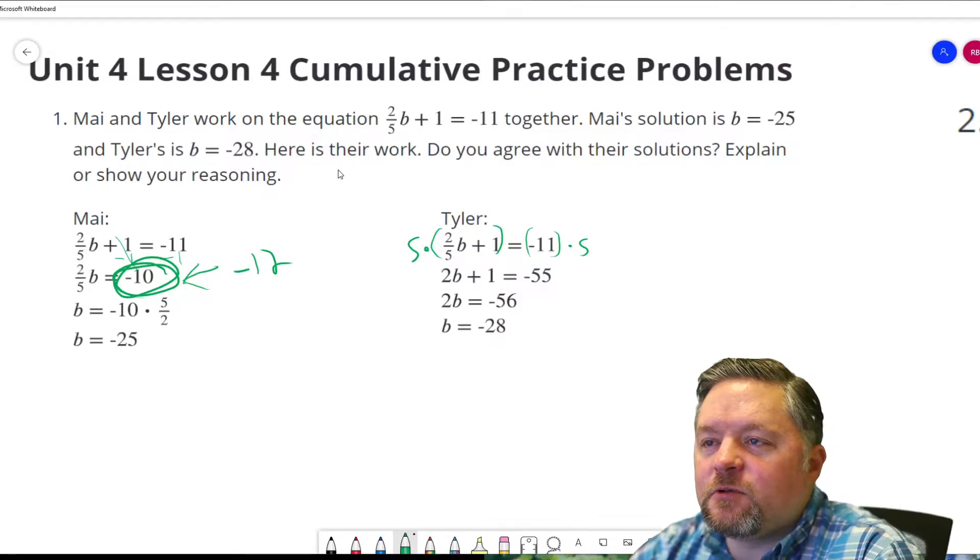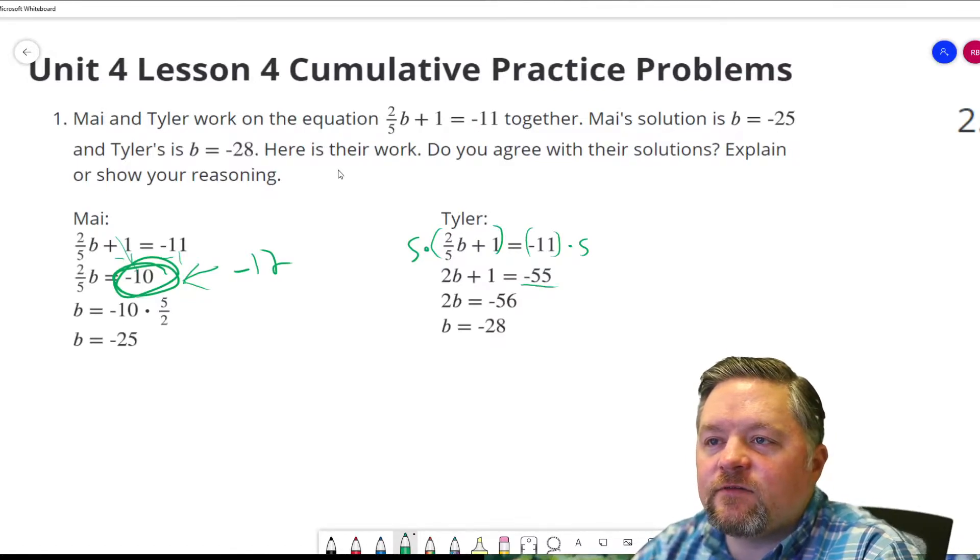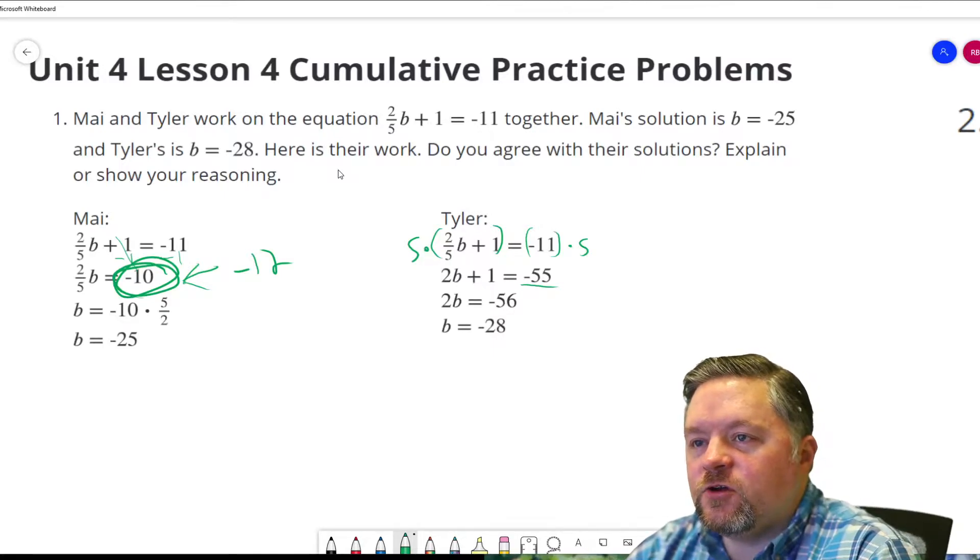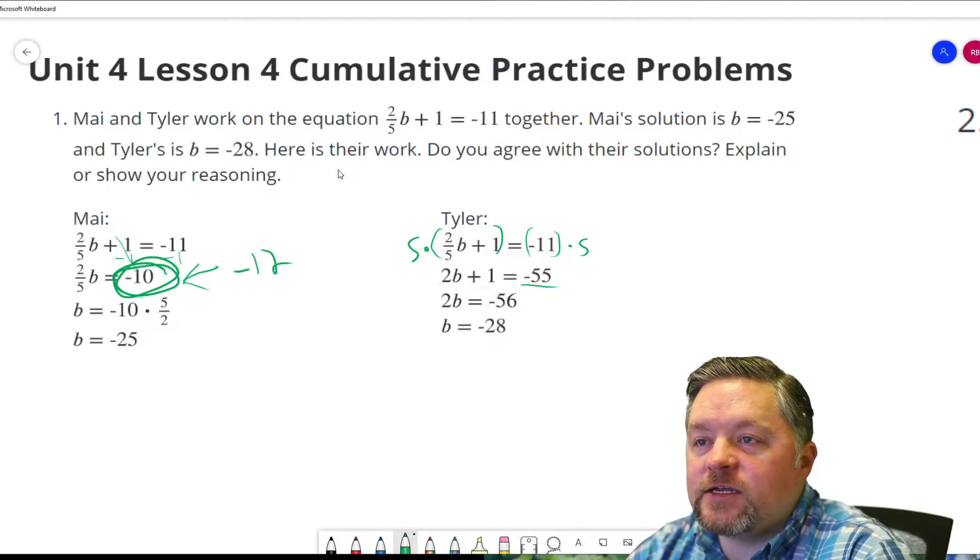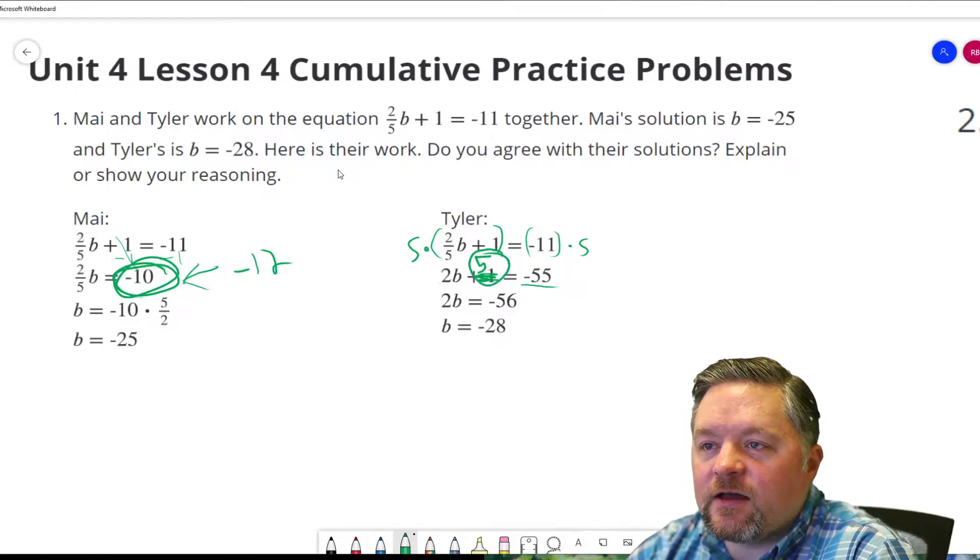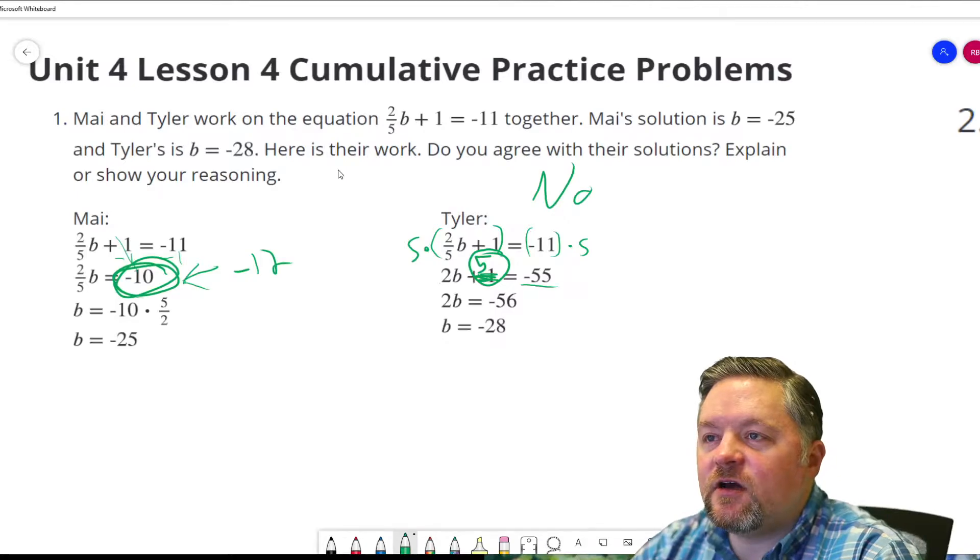And if we multiply negative 11 times 5, that's negative 55. 2 fifths times 5 is 2. But we have to multiply this whole equation. Which means we have to multiply this plus 1 times 5. So this right here should be a 5. Do I agree with their solutions? No. They're both wrong.